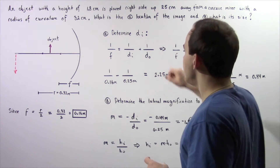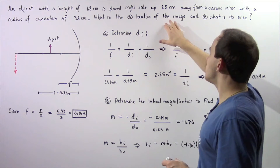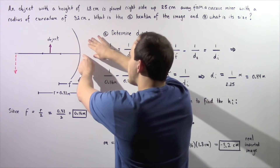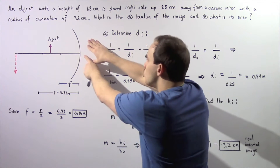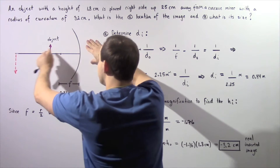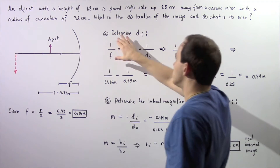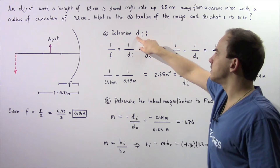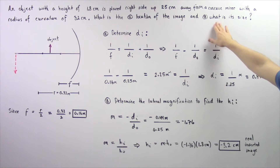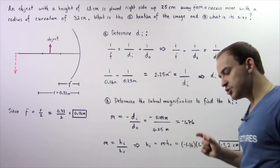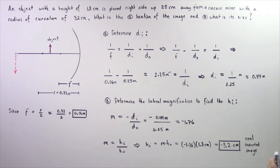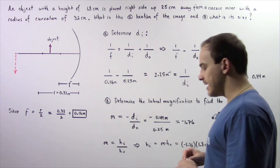In part A, we want to find the location of the image — that is, the perpendicular distance from the center of our concave mirror to where our image is formed. In part B, we want to find the size of the image. We're going to use the lateral magnification equation to calculate what the height is.